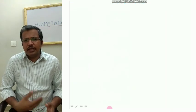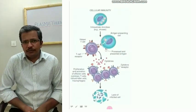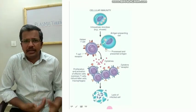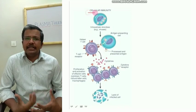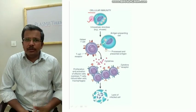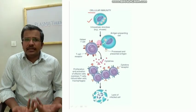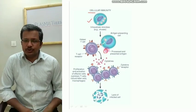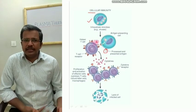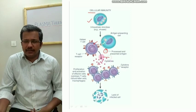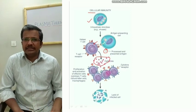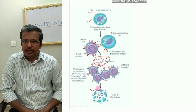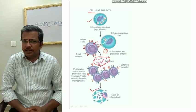After innate immunity, there are mainly two types of immune responses in our body. The first is cell-mediated immunity, where antigen-presenting cells present the antigen from a virus, bacteria, or other pathogen to the T cell. The T cell then produces chemicals like cytokines, leading to cell lysis and thereby killing of the pathogen.